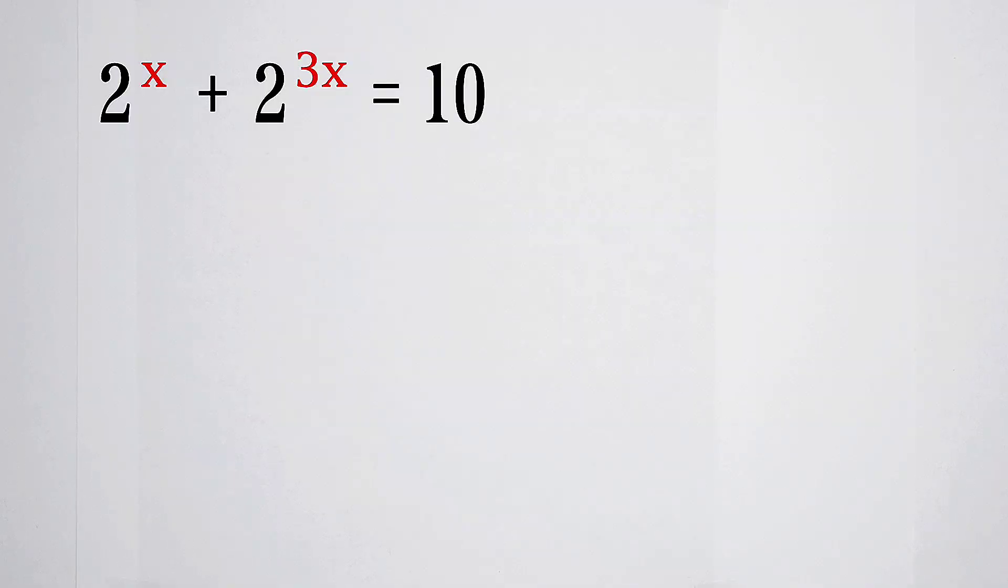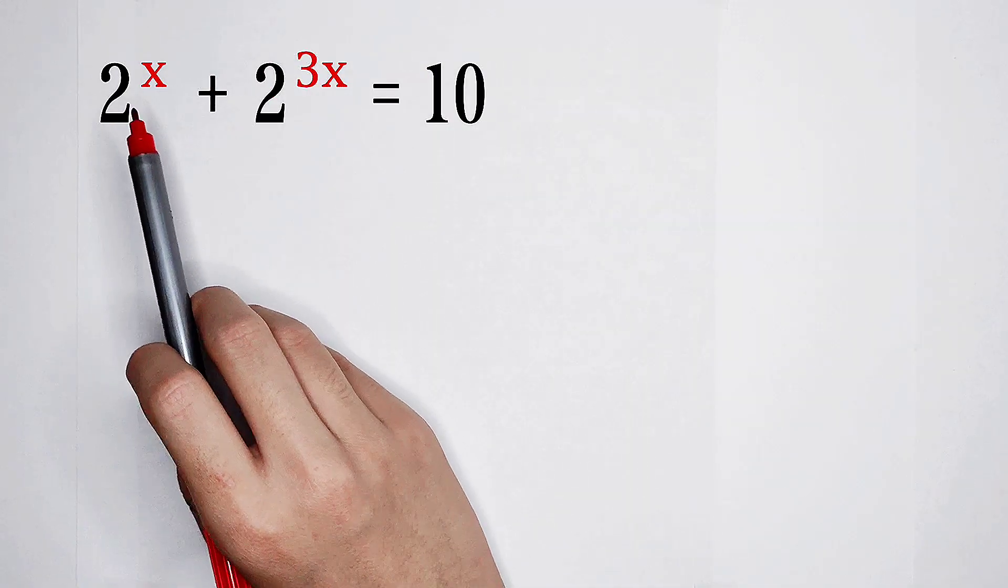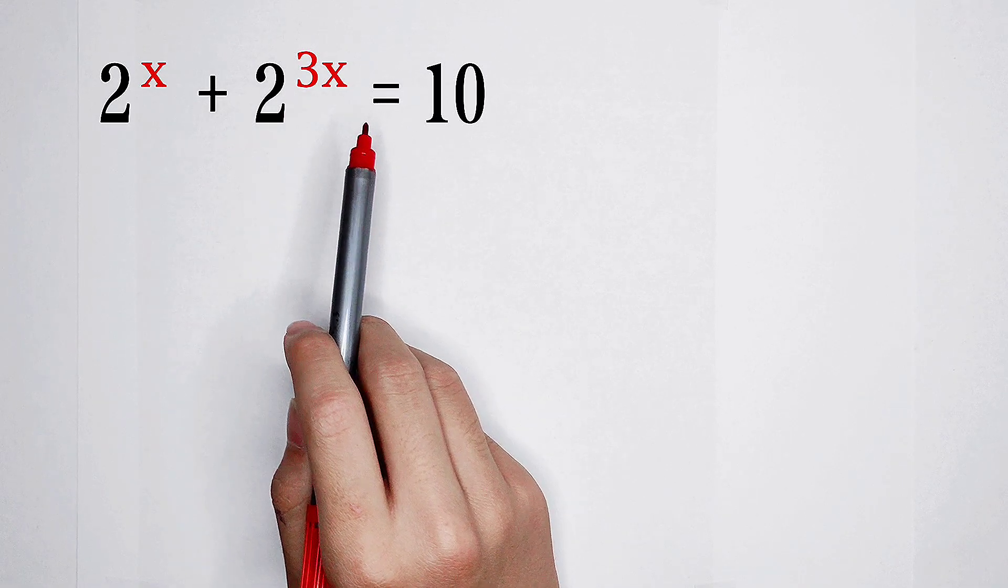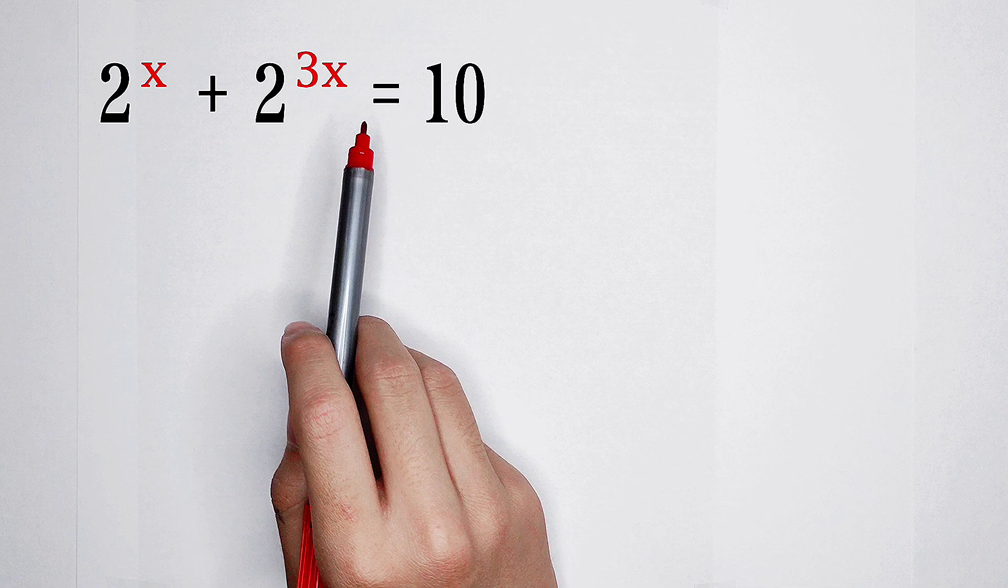Welcome to Math We Know. Solve the x from this equation: 2 to the power x, plus 2 to the power 3x equals 10. How should we do it?